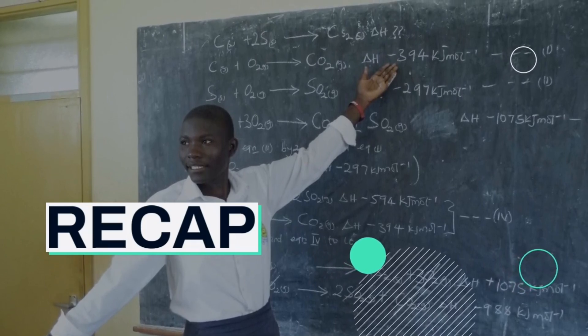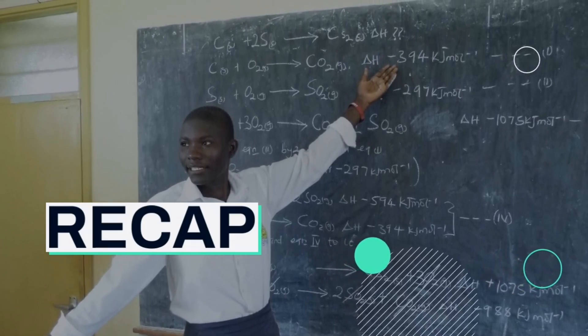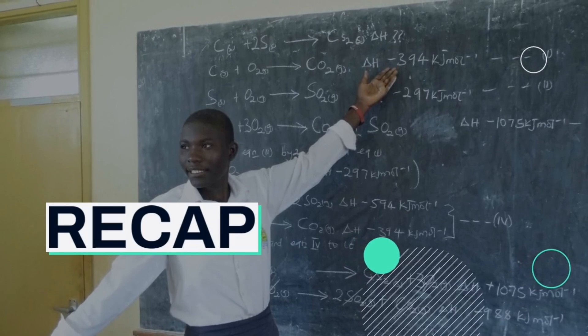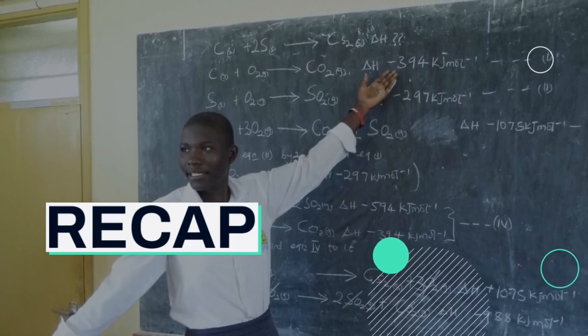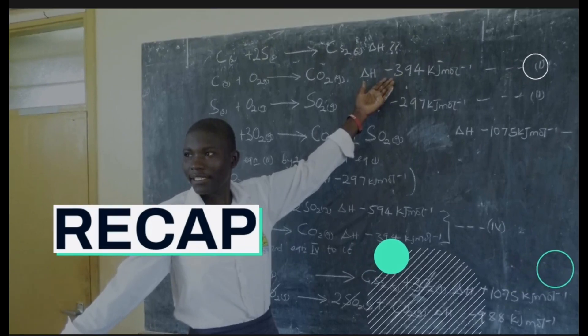In our fourth video, we discussed types of variables, where we said there are three main types: independent and dependent variables, confounding variables, and moderating variables. And today, we shall discuss our fourth element, which is the research problem.